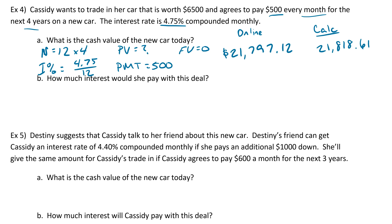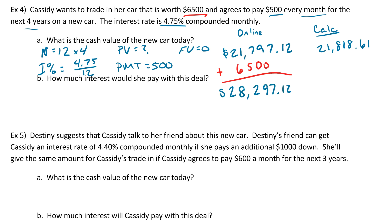Now we're not quite at our answer yet, because that is not the cash value of the new car — that's just how much she took out a loan for. But she also put in $6,500 worth of a trade-in, which means they took $6,500 off of the cash value because she traded in her car. So in order to get the true cash value, we need to add back in that $6,500. A down payment would also have to be added back in the same way. So if we do that, we get $28,297.12 — that is the cash value of the new car.